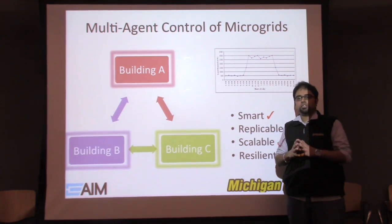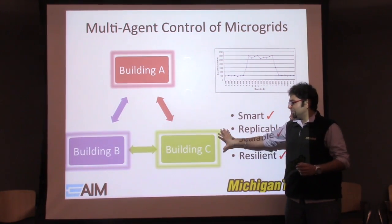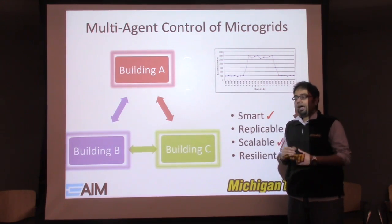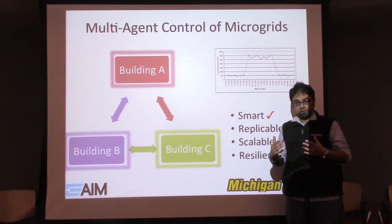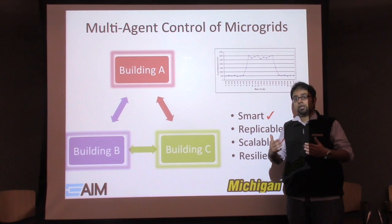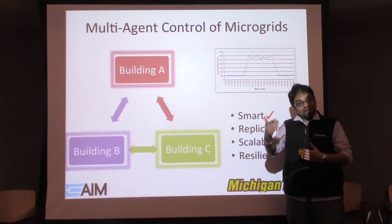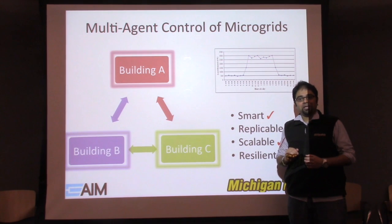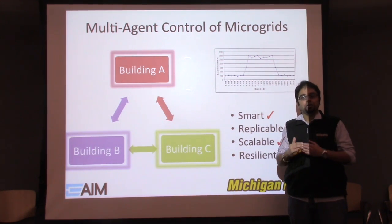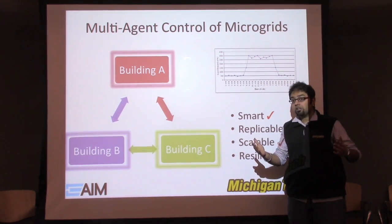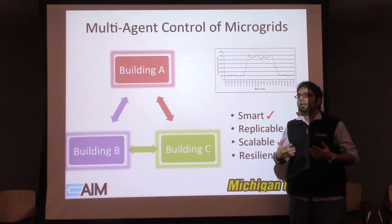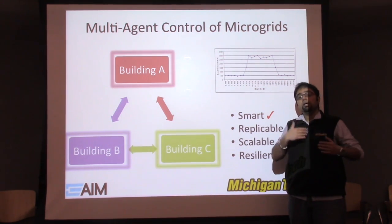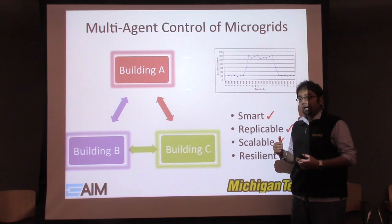Agents are just software minions that sit on top of each building and they have the ability to be smart. For example, you could train a software agent to predict what the shape of the consumption graph is going to look like. They can tell you, based on a history of data, that students are likely to come in at 8 a.m. and likely to leave at 5 p.m.